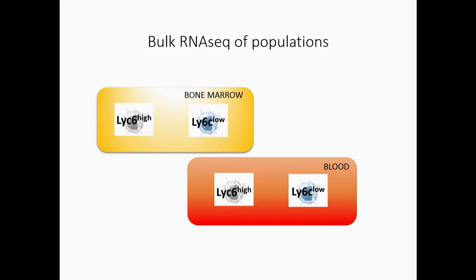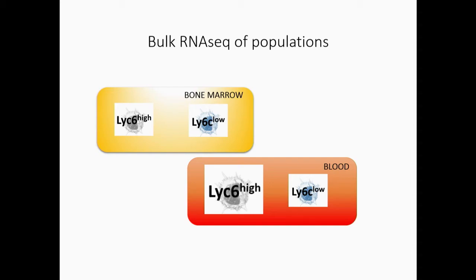So we proceeded then to do bulk sequencing, which we can get much deeper reads — around 10 million reads in all four of these populations in both cancer and in wild type. And we did multiple comparisons looking for any differences and differential gene expression. And what really came forward from that was it's this Ly6C high population in the blood that are affected. This was really good because this was the population we were expecting to be changed. And it's also really interesting because it's not occurring in the bone — so whatever conditioning and transcriptional changes that are occurring are happening in the blood due to a blood signal, whether that's tumor exosomes or otherwise.